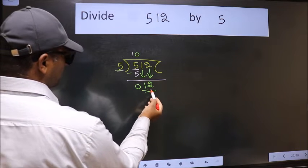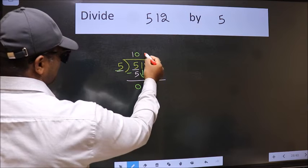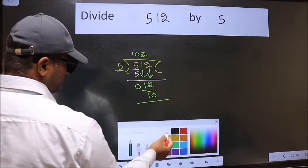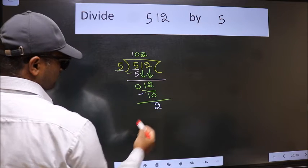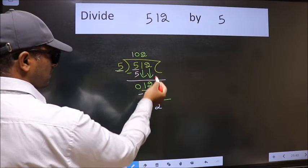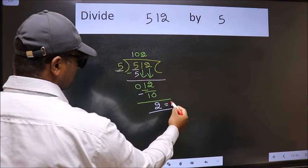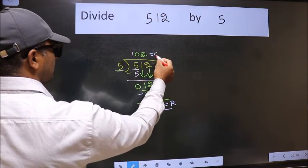Now 12. A number close to 12 in the 5 table is 5 times 2 equals 10. Now we should subtract. We get 2. No more numbers to bring down, so we stop here. This is our remainder, and this is our quotient.